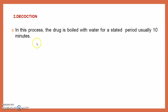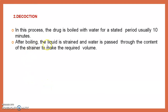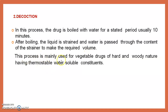Then we see decoction. In this process, the drug is boiled with water for a stated period of time — we boil the drug for about 10 minutes. After boiling, the liquid is strained and water is passed through the contents of the strainer to make up the required volume. This process is mainly used for vegetable drugs of a hard and woody nature having thermostable water-soluble constituents.